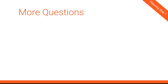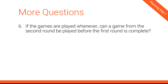Question six: if games are played whenever, can a game from the second round be played before the first round is complete? For example, if we have four games in round one and two of those are already played, can those two winners play their round two game before the other four teams finish round one? We need to figure that out to know what we can and cannot allow. Again, if we're scheduling games, this doesn't matter.